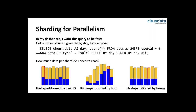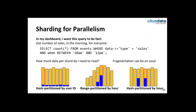Let's look at another one — this gets sales events in the morning, say between 10 a.m. and 12 p.m. How much data per shard do I have to read? If I had hash partitioned by user ID and assuming sales come from many different users, my data will be evenly distributed across the shards. If I had range partitioned by the hour, all my data from 10 a.m. to 12 p.m. will be in two shards only, so the parallelization I get is worse. The same would be true for hash partitioning by hour. So if you have this type of query a lot, hash partitioning by user ID would be a good choice.